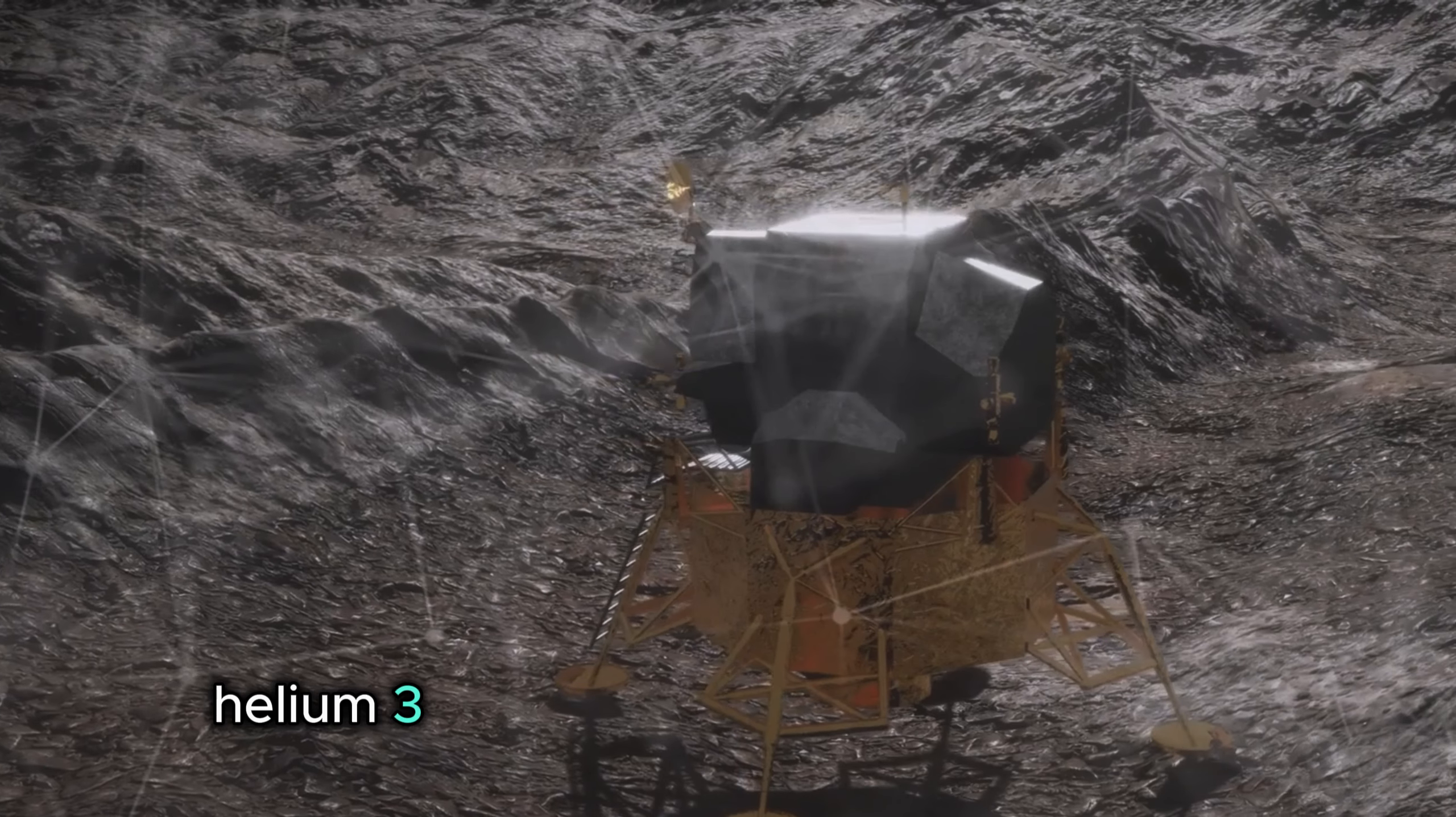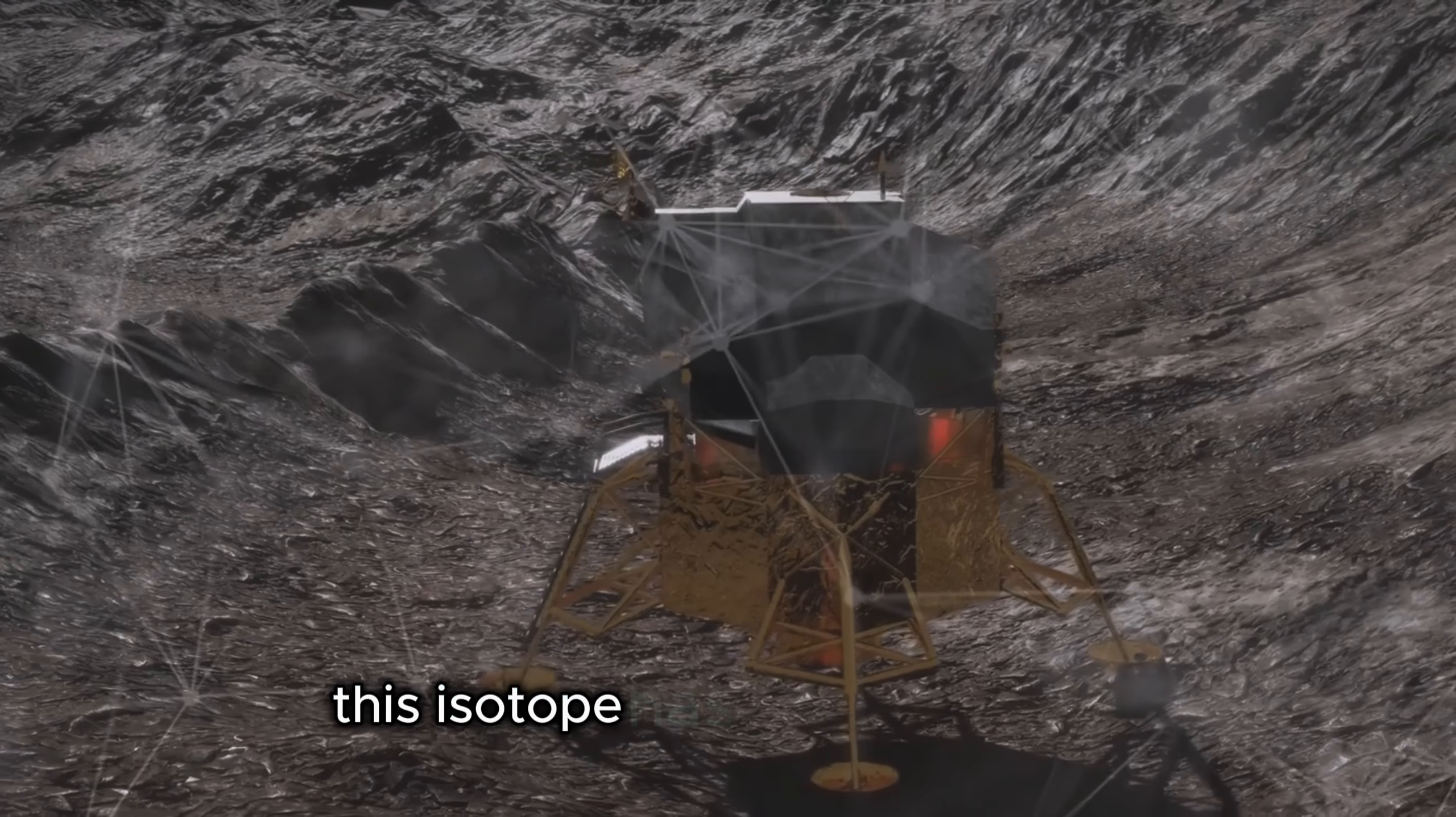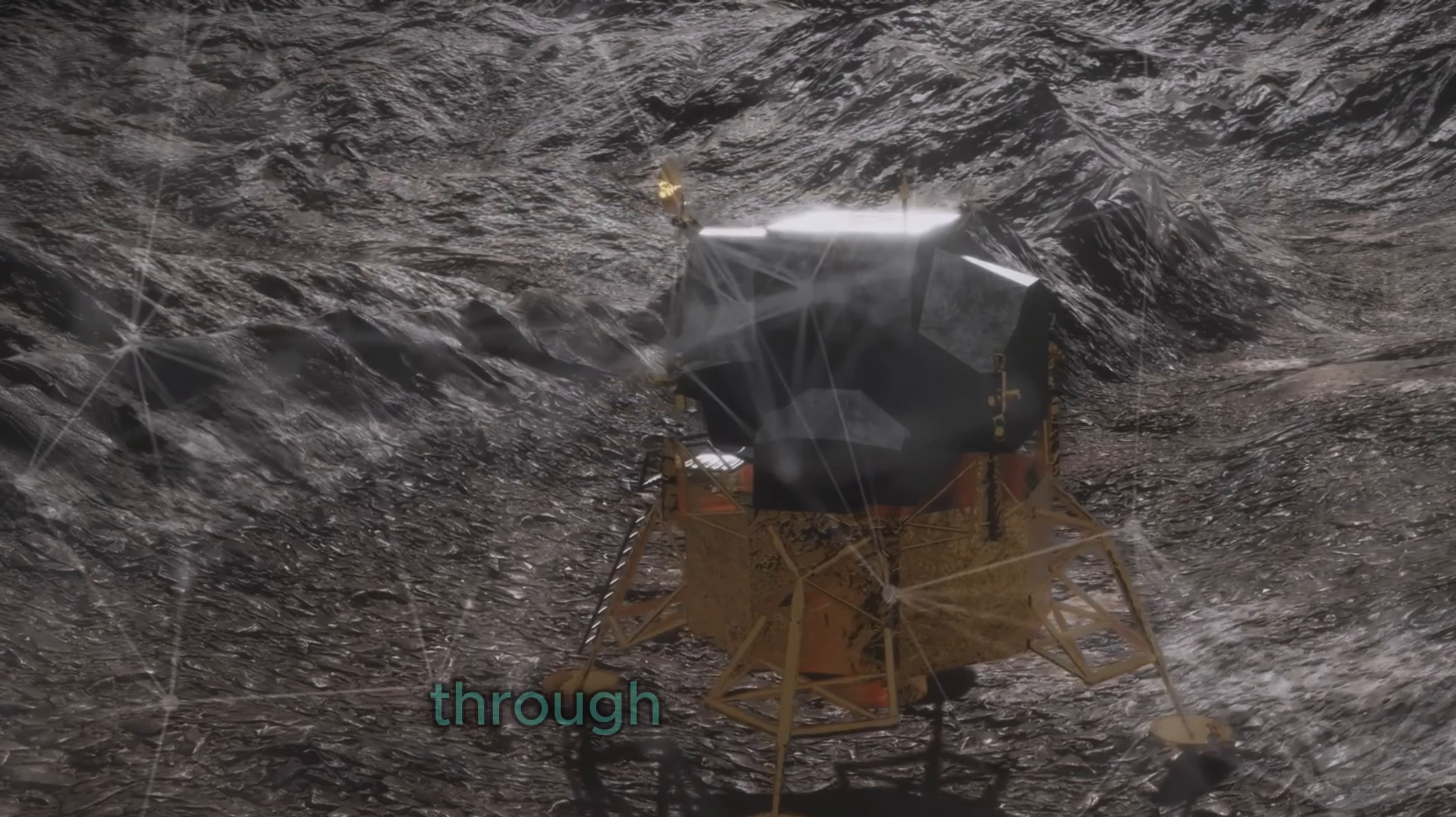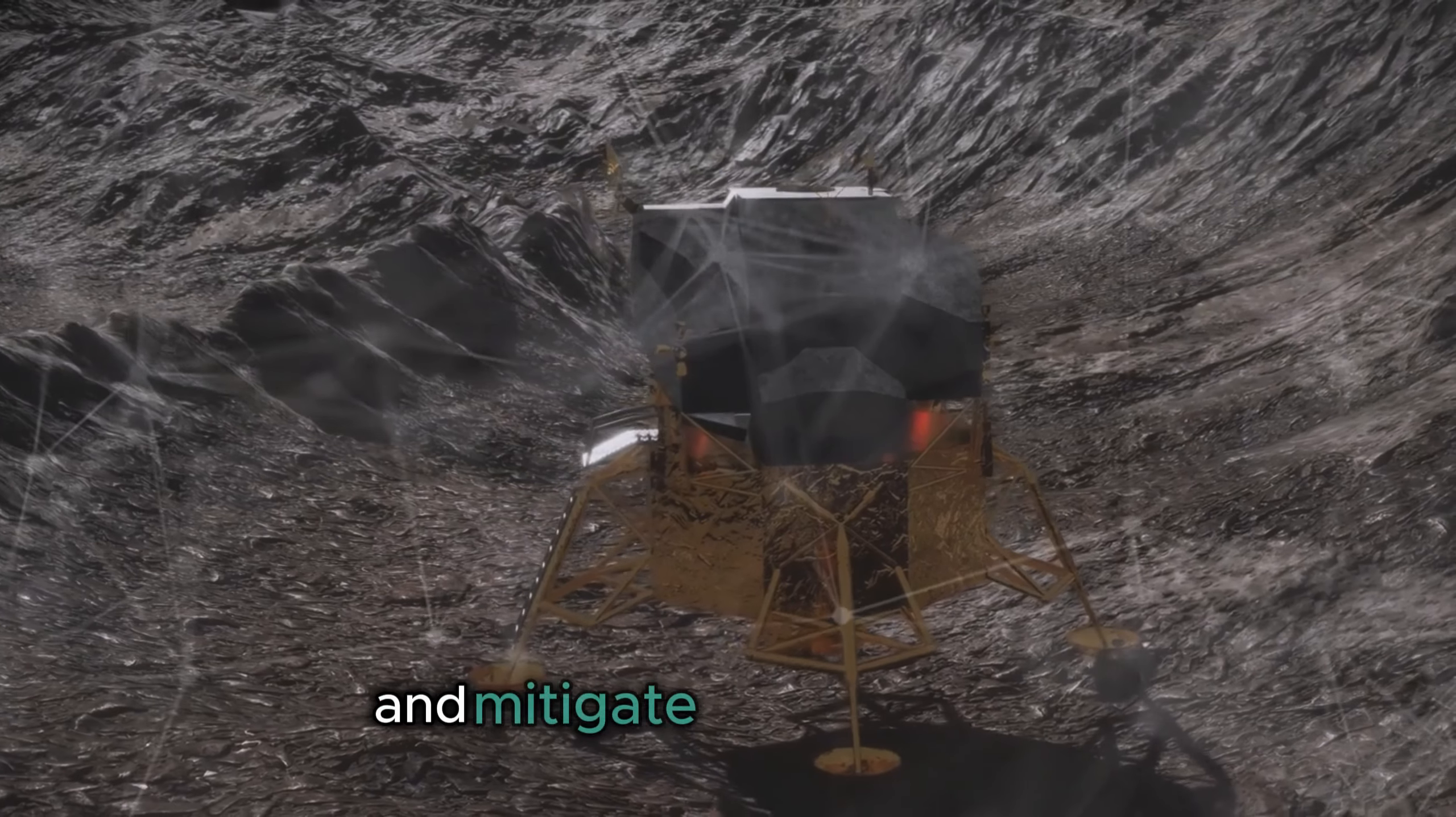Helium-3, a rare isotope found in lunar soil, could revolutionize energy production on Earth. This isotope has the potential to provide a nearly limitless source of clean energy through nuclear fusion, a technology that could drastically reduce our dependence on fossil fuels and mitigate climate change.